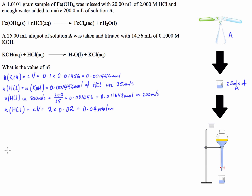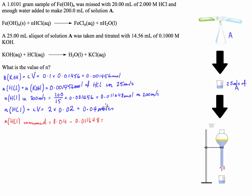Now we can work out the number of moles of hydrochloric acid consumed through its reaction with the iron hydroxide. That's just the number of moles to start with subtract the number of moles remaining, which equals 0.04 minus 0.011648, giving 0.028352 moles.